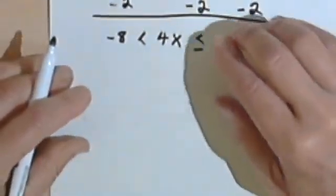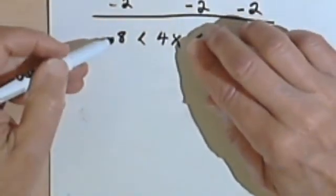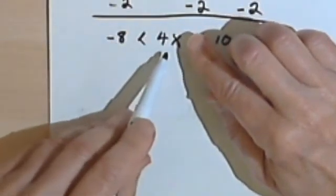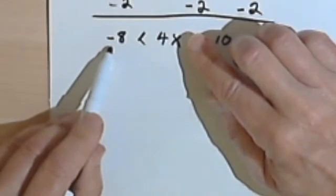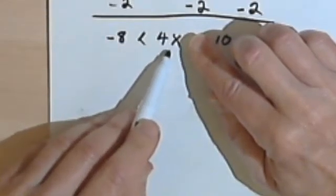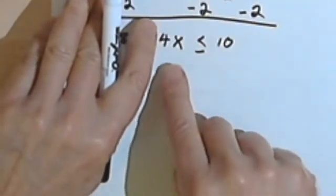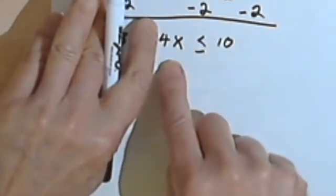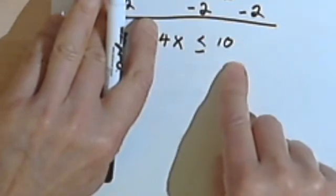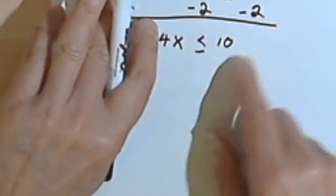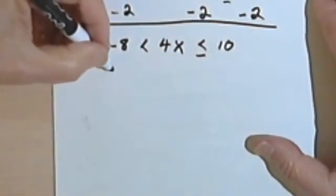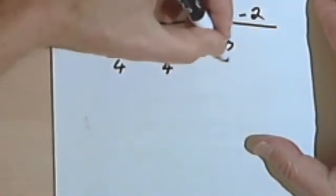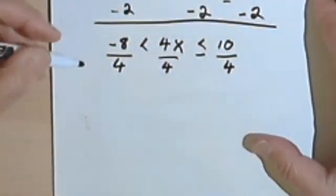So once again I'm thinking, if all I had was negative 8 is less than 4x, then what I would do would be to divide by 4 both here on the left and here where the 4x is. And if all I had was 4x is less than or equal to 10, I would also divide both sides of the inequality sign by 4. So I'm going to divide everything by 4.